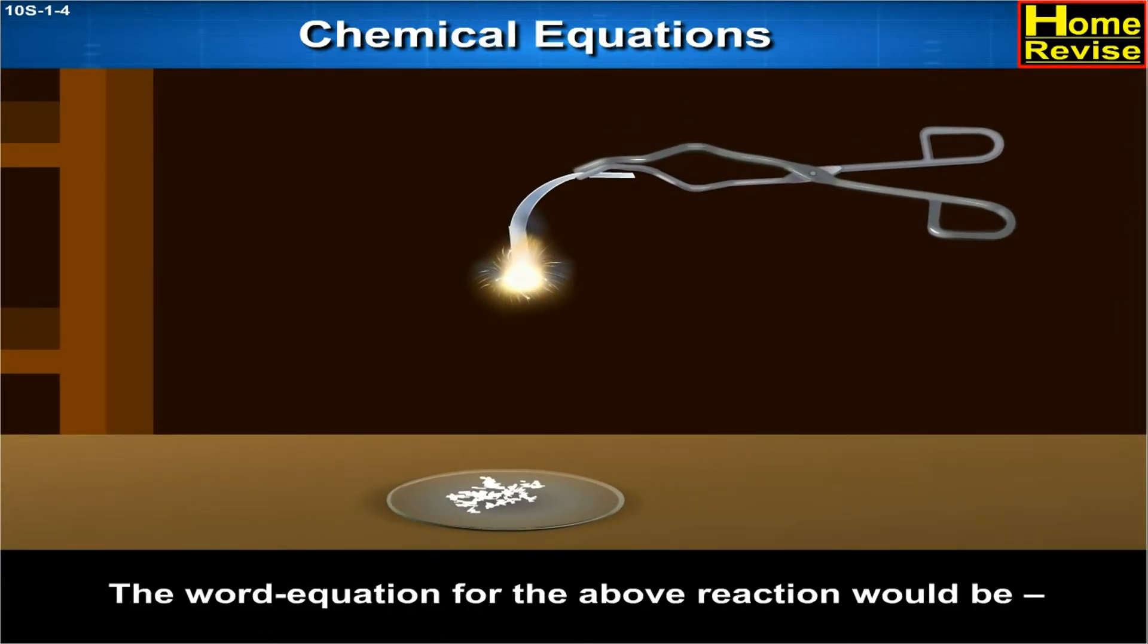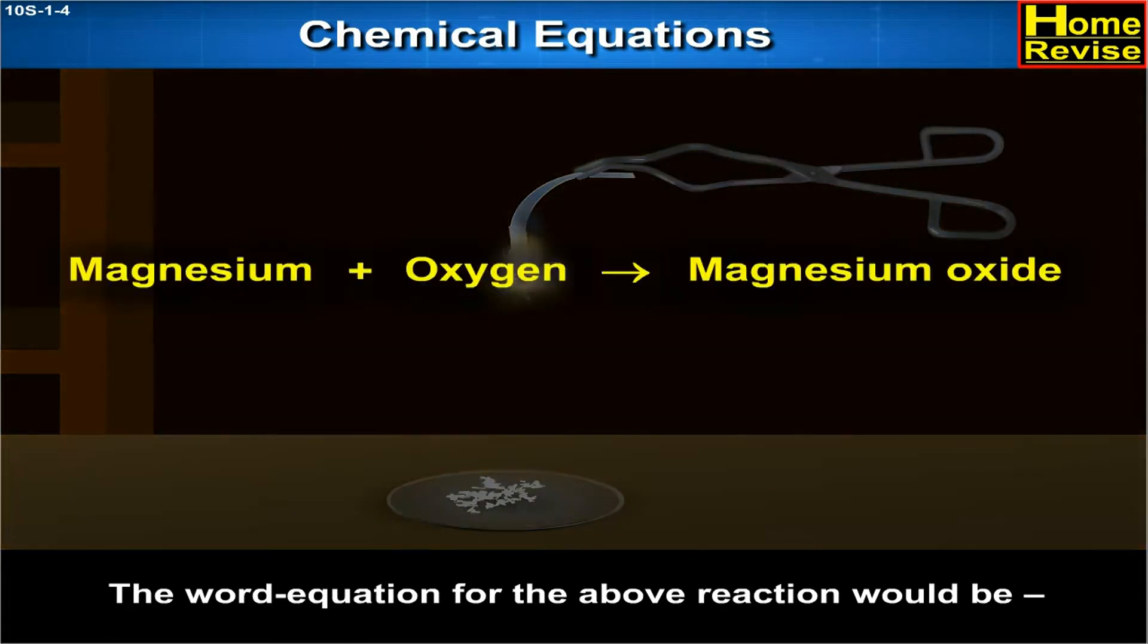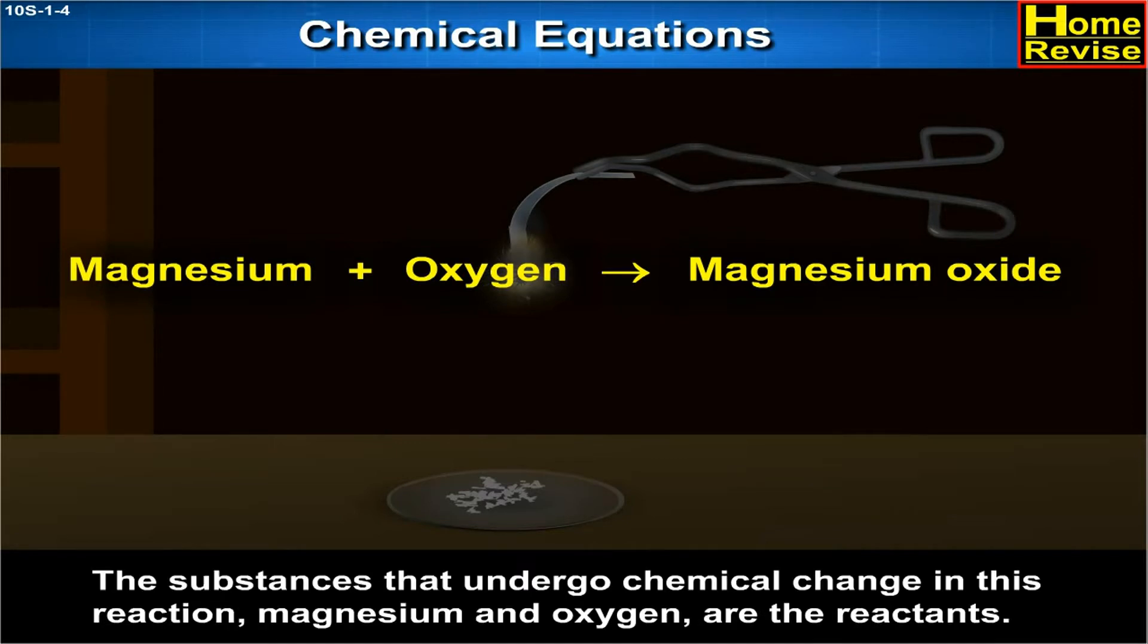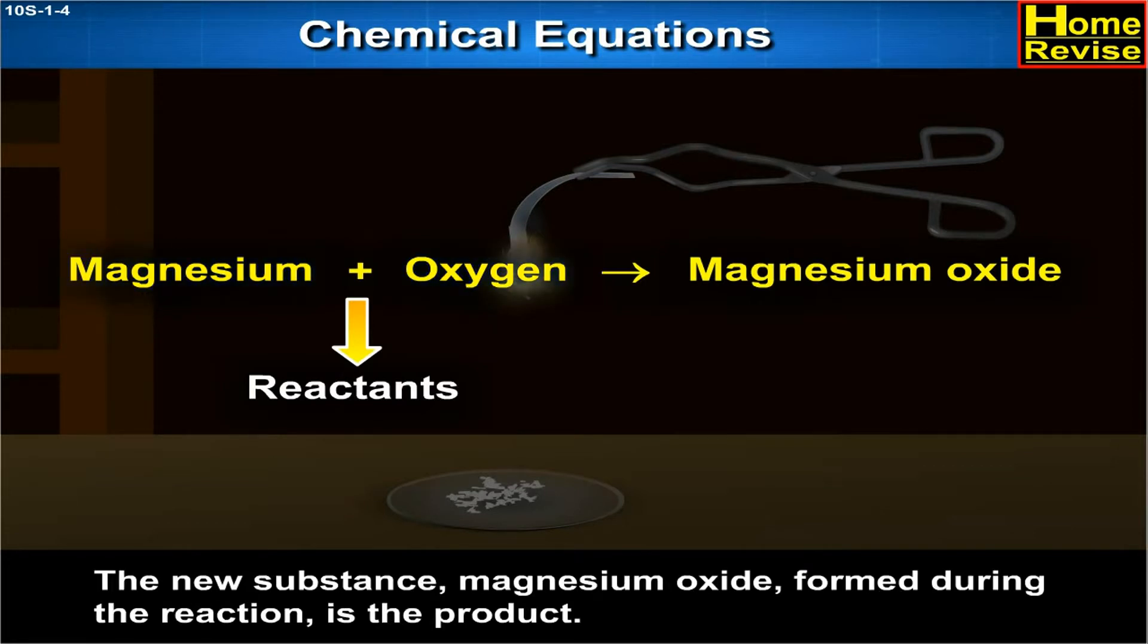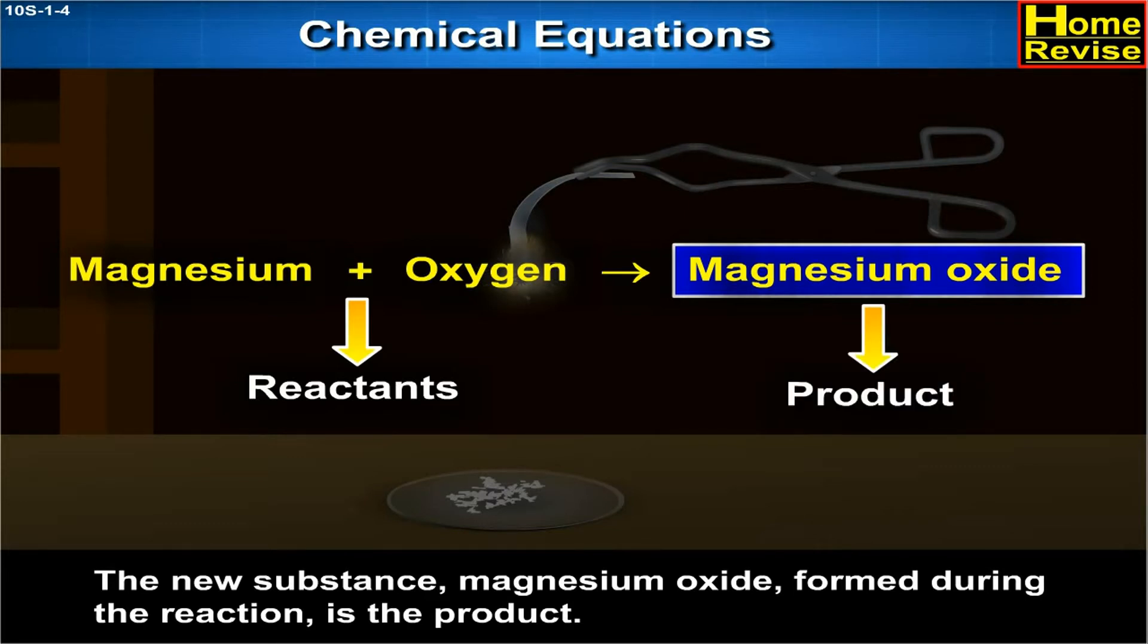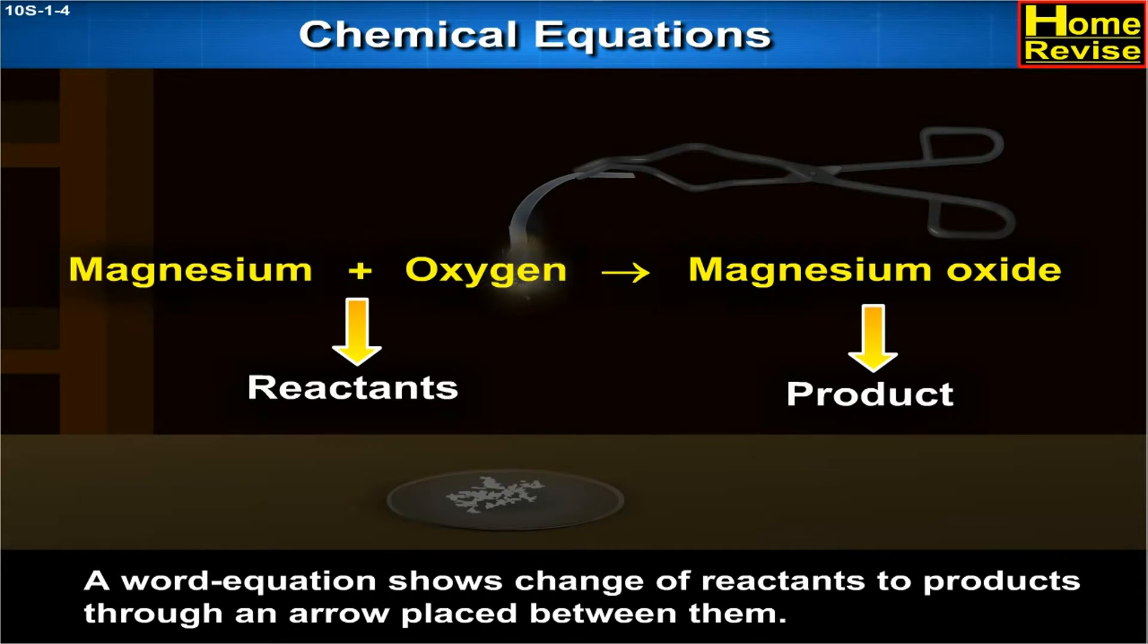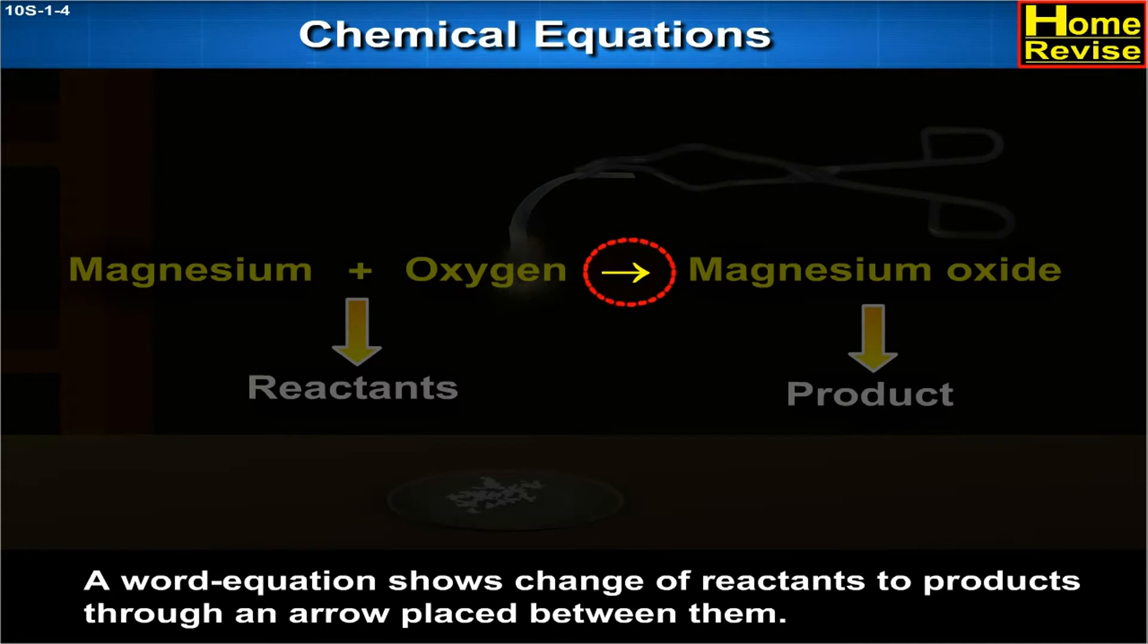The word equation for the above reaction would be: Magnesium plus oxygen, which are the reactants, give magnesium oxide, which is the product. The substances that undergo chemical change in this reaction, magnesium and oxygen, are the reactants. The new substance, magnesium oxide, formed during the reaction, is the product. A word equation shows change of reactants to products through an arrow placed between them.